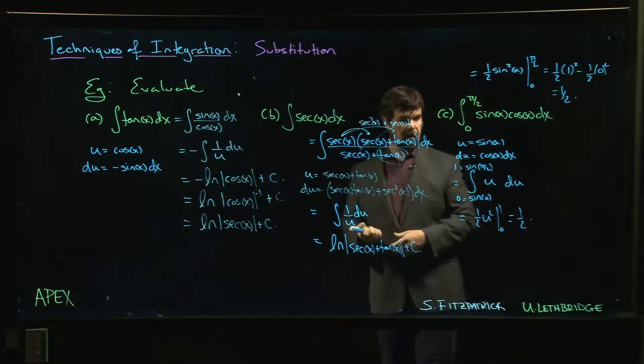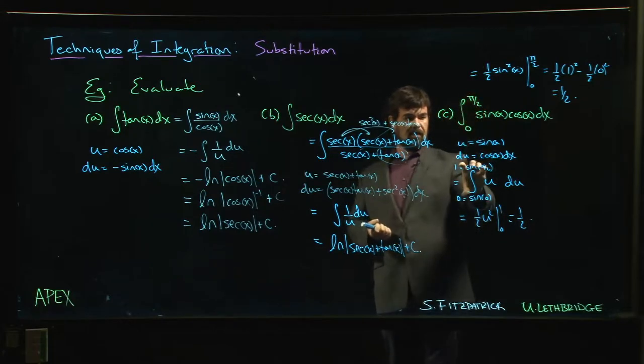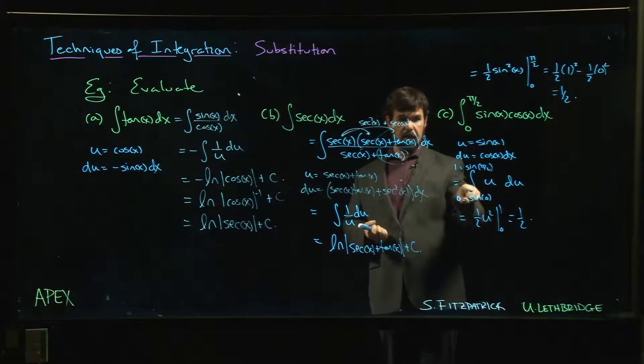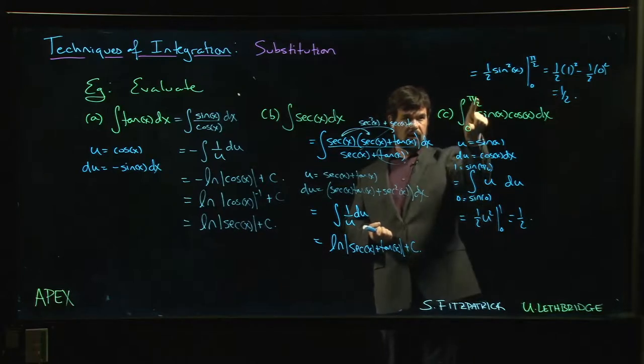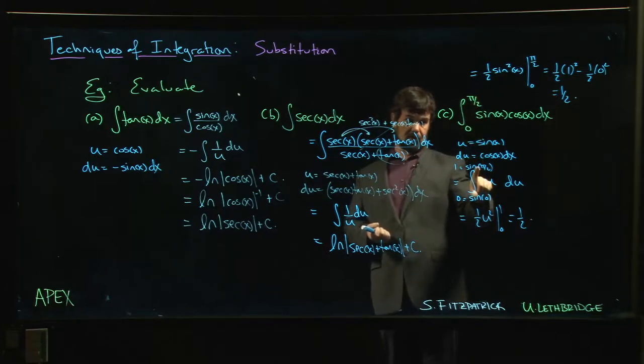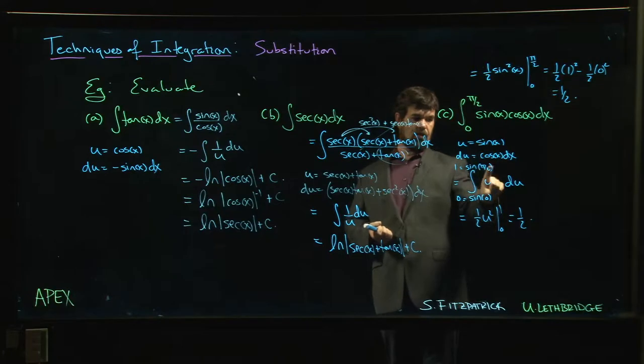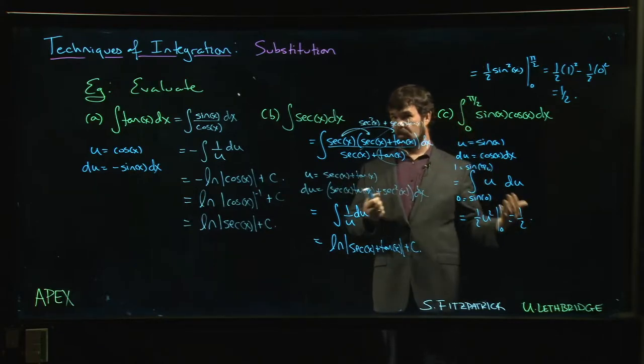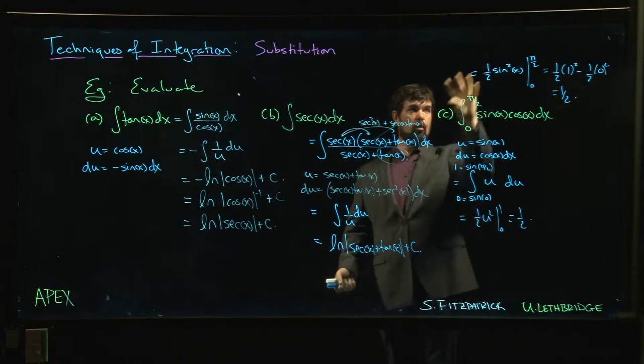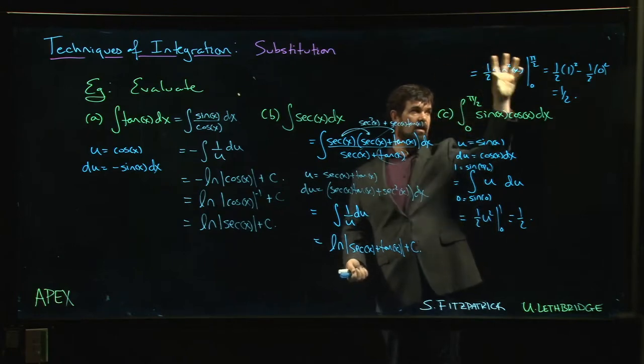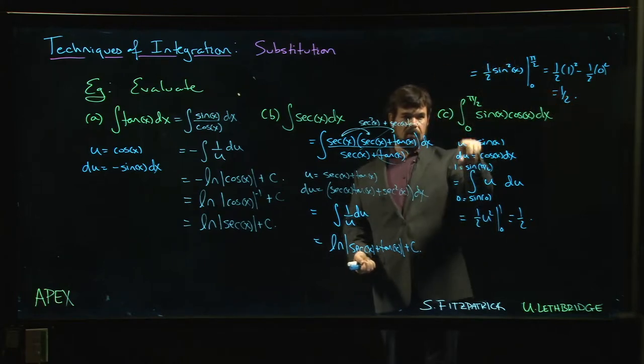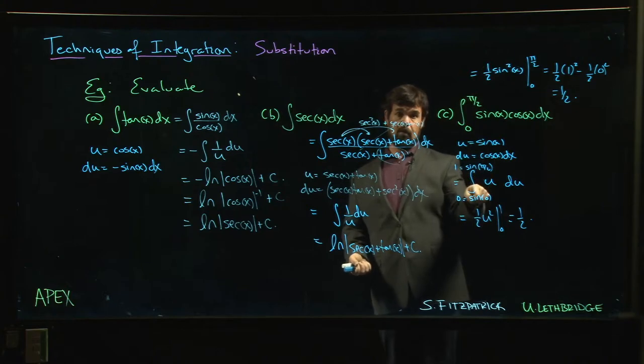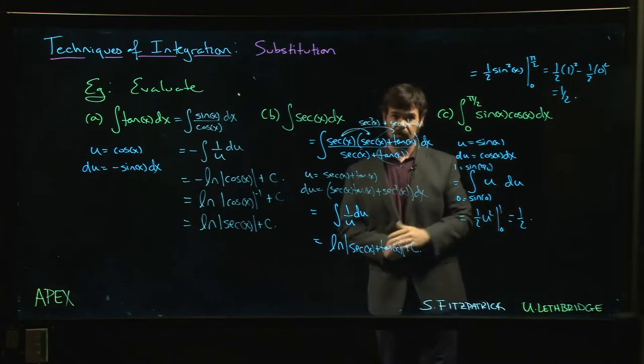So you have to remember that if you want to keep the limits in the intermediate steps, they have to be the right limits. You can't use the x limits for a u integral. If you're going to switch in terms of u and you want to keep it as a definite integral, you have to figure out what are the u values corresponding to the x values you started with. So it's one way or the other. Either do the indefinite integral first, then put in the original values, the original limits, or remember to change the limits when you change everything else.